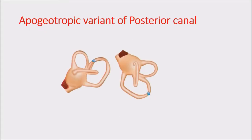There is a new variant described in a few papers called the geotropic variant of the posterior canal. I have seen two or three cases presenting with strong torsional nystagmus on the Dix-Hallpike but with the torsional component in the reversed direction — opposite to what you expect in posterior canal BPPV. This may be because the otoconia is in the common crus, giving a presentation similar to the anterior canal except for the reversed direction of torsion. Only a few articles have been published on this concept.